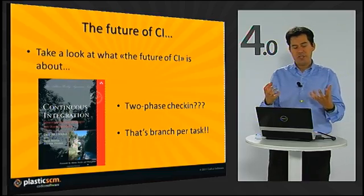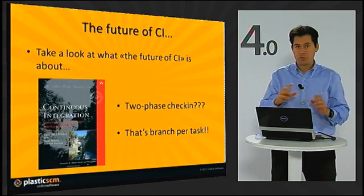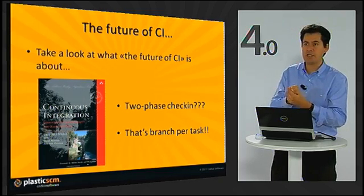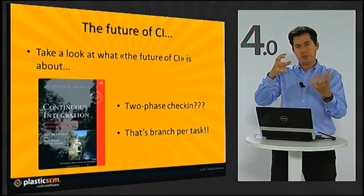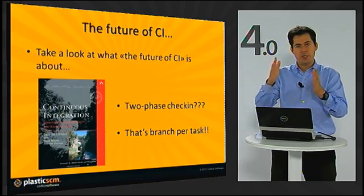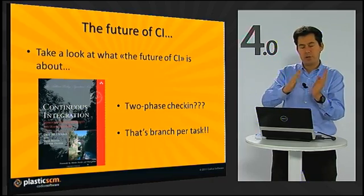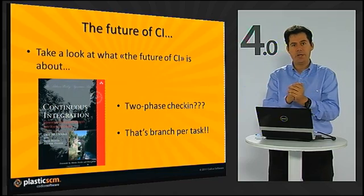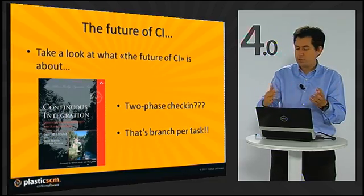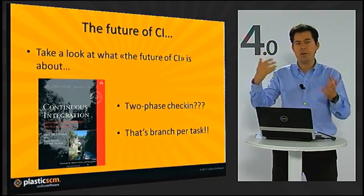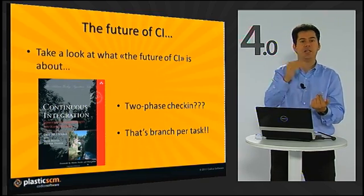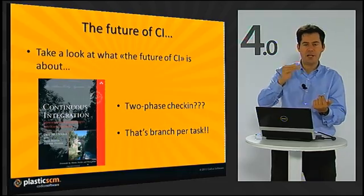You have probably heard of this excellent book about continuous integration. In the last chapter they talk about the future of continuous integration and introduce a concept where code is first tested before reaching the mainline. Well, it is already here and it's called branch-per-task. If you use branches, you don't need to come up with a new alternative way of checking in — it's just a branch. Check into your branch, pass the tests there, and when you're done, integrate.